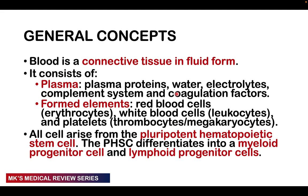Remember that blood is actually a connective tissue found in fluid form. It's largely divided into two parts: a fluid part known as the plasma component, consisting of plasma proteins — predominantly the globulins, fibrinogen, and albumins — together with complement proteins and coagulation factors. The majority is made up of water and electrolytes. Then you have the formed elements — the cellular component — predominantly red blood cells (erythrocytes), white blood cells (leukocytes), and platelets (thrombocytes or megakaryocytes). All these formed elements are synthesized in the bone marrow and come from a pluripotent hematopoietic stem cell.